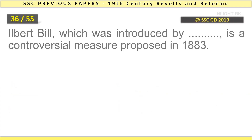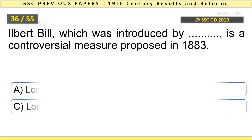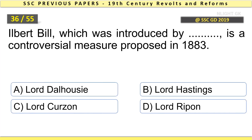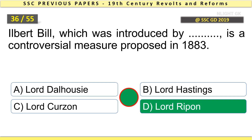The Ilbert Bill, which was introduced by whom, is a controversial measure proposed in 1883? Lord Ripon.